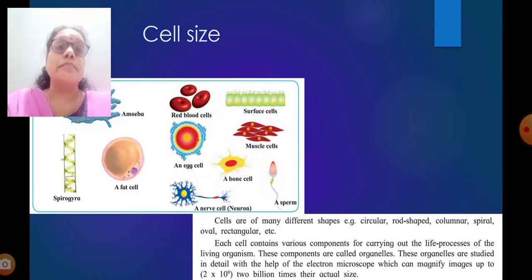Cell size. You can find out different shapes of cells: amoeba with no particular shape, red blood cells or RBCs with circular shape, surface cell, an egg cell, muscle cell, spirogara, a fat cell, a nerve cell, a bone cell, a sperm. Cells are of many different shapes - circular, rod-shaped, columnar, spiral, oval, rectangular, etc.